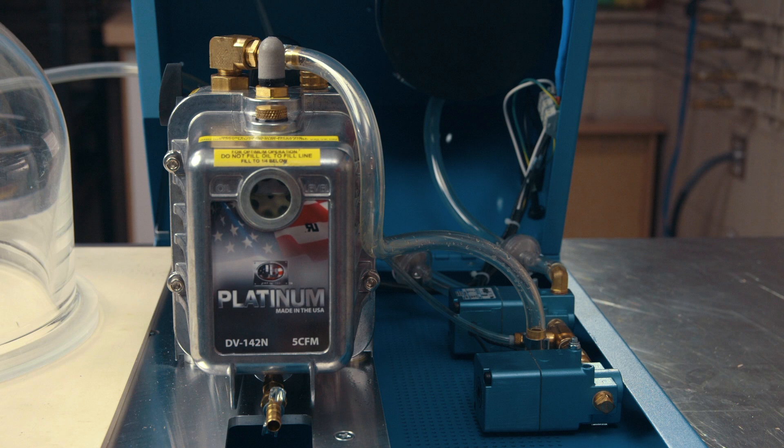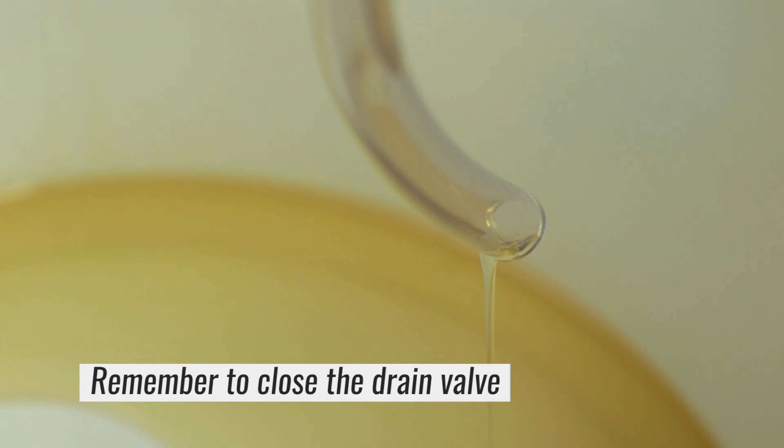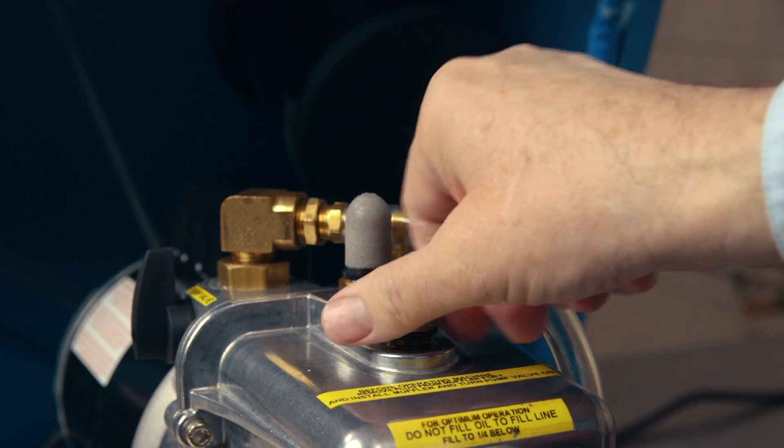After about 90 hours of use, the oil in the vacuum pump should be drained and the pump flushed out before new oil is added. To flush out the pump, follow the procedures we just demonstrated to drain the used oil from the vacuum pump. Then open the cap and